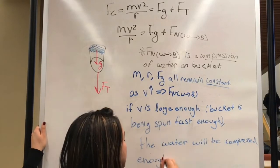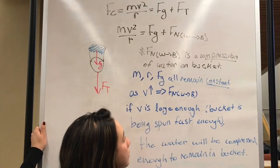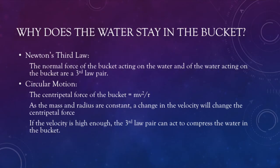If the velocity is high enough, the compression of the water will keep it in the bucket. The water will stay in the bucket because of our Newton's third law pair, and because of circular motion. As the mass and the radius are constant, a change in the velocity will change the centripetal force. And if the velocity is high enough, the third law pair can act to compress the water in the bucket.